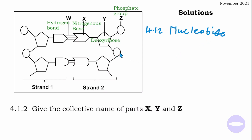A nucleotide is a building block of DNA and RNA. When nucleotides are packed together we end up with a DNA molecule. A nucleotide is also called a monomer; if we combine more nucleotides we end up with a nucleic acid — either DNA or RNA. So a nucleotide is a building block of nucleic acids.